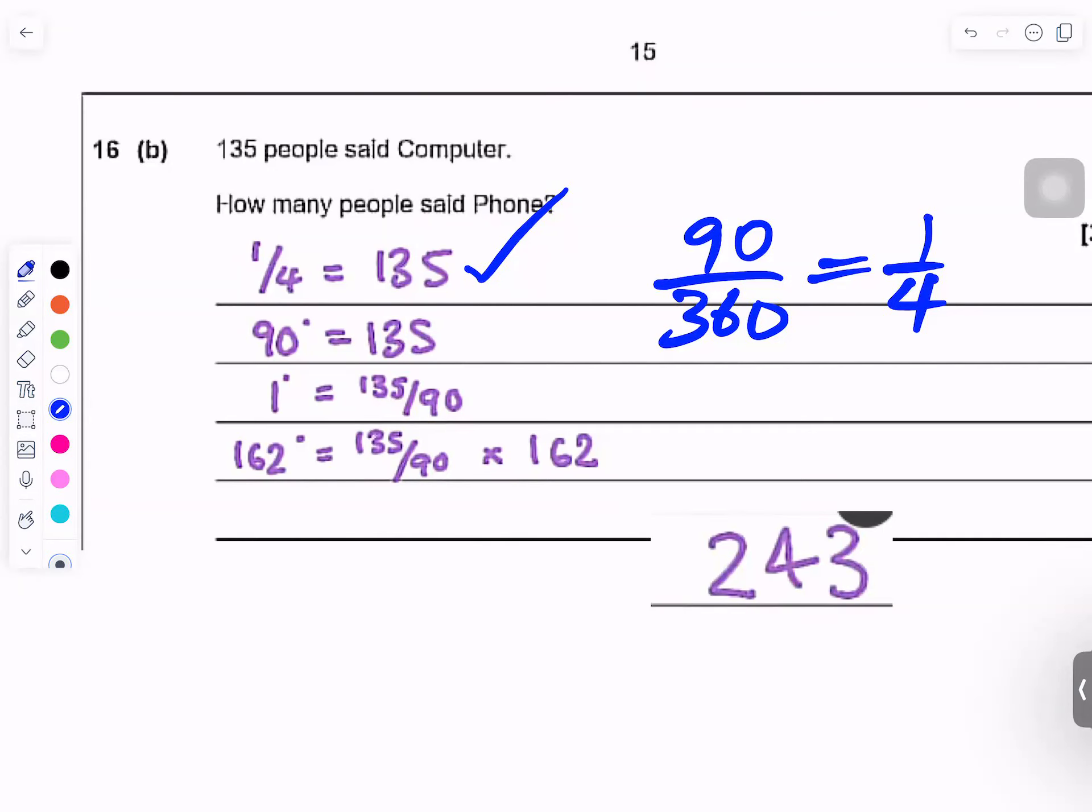So how many people said phone? You have to find the number of degrees. 90 degrees is 135, so you divide by 90. You get one degree, you divide by 90, and then you get to 162. You times 162, and you times 162 on the other side, and that gives you 243.